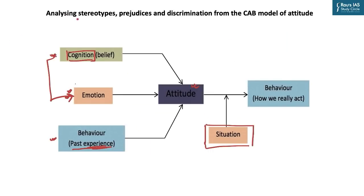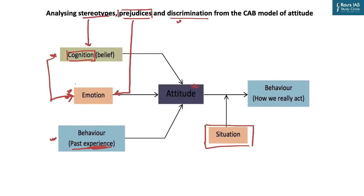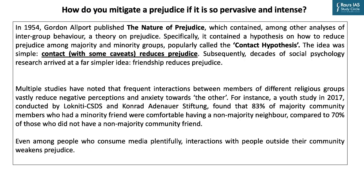Three terms are important for the exam: stereotypes, prejudices, and discrimination. Stereotypes are our beliefs about the typical characteristics or traits of members of a specific group — in terms of attitude, stereotypes form the cognitive component. Prejudice is basically pre-judgment — forming an opinion before you are aware of the relevant facts. Prejudice is always used in a negative connotation; it occurs when someone holds a negative feeling about a group of people, and in terms of attitude, prejudice forms the affective or emotional component. Discrimination is action, and in terms of attitude, it forms the behavioral component.